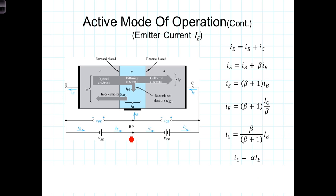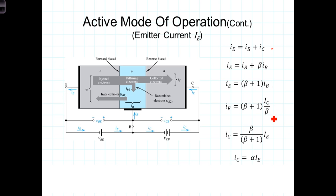From the diagram, the emitter current is equal to the sum of the base and collector currents: I_E = I_B + I_C. Since I_C = beta * I_B, we get I_E = (beta + 1) * I_B. We can also express I_C in terms of I_E: I_C = (beta / (beta + 1)) * I_E. The ratio beta / (beta + 1) is sometimes assigned the constant alpha, which is a number very close to one but slightly less than one.